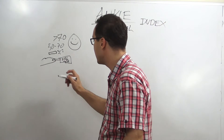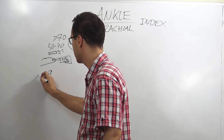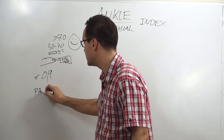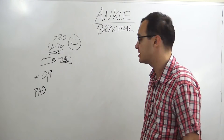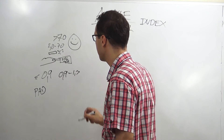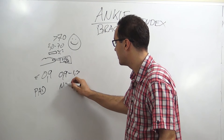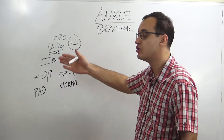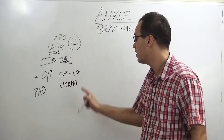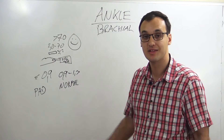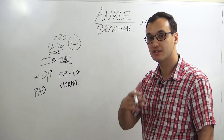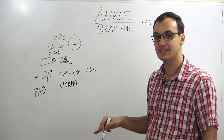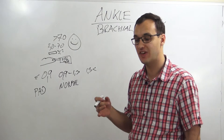If the ankle brachial index shows less than 0.9, it indicates peripheral artery disease. If it is 0.9 to 1.3, then this is a normal patient and we can reassure the asymptomatic patient that there's no problem. But if it's more than 1.3, this can indicate calcification — meaning the artery wall is hardened by calcium.